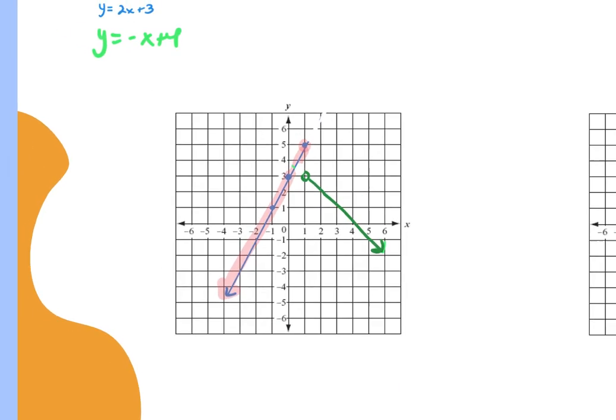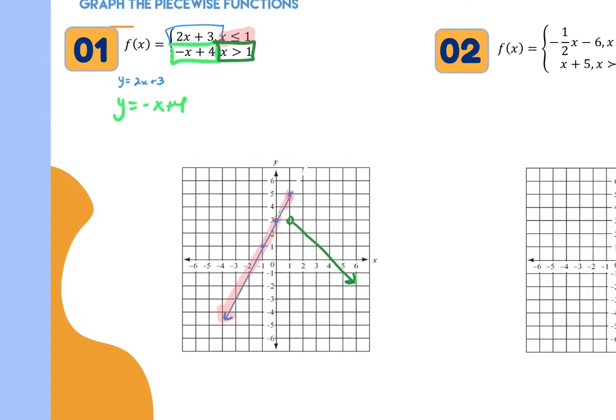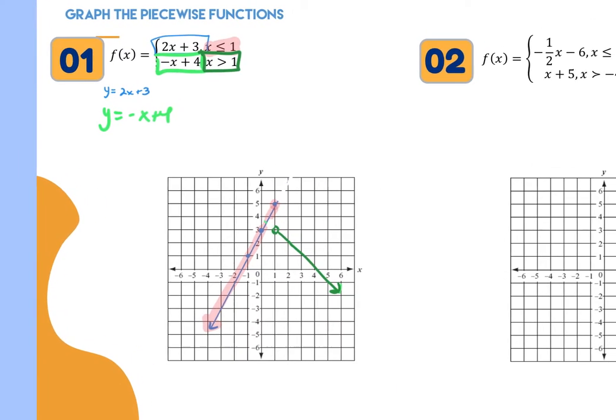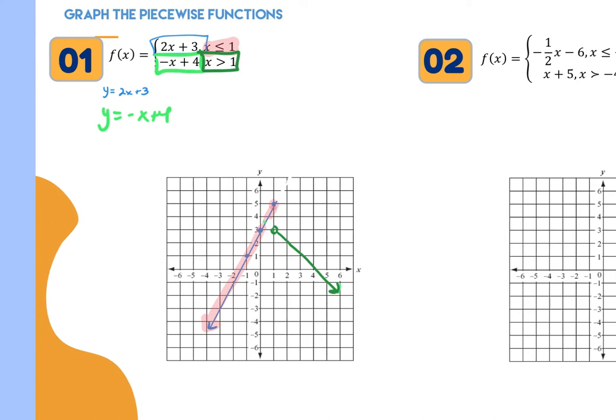Because this is still a function, it must pass the vertical line test. At the boundary x equals 1, one endpoint has to be solid and one has to be open — they can't both be solid, otherwise it would fail the vertical line test. The two pieces also can't overlap beyond that point. A vertical line hitting the graph at more than one point means it's not a function.